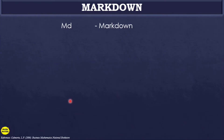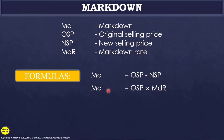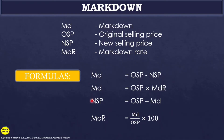The terminologies we will use in this lesson are: markdown, original selling price, new selling price, and markdown rate. The formulas are: Markdown = Original Selling Price − New Selling Price; Markdown = Original Selling Price × Markdown Rate; New Selling Price = Original Selling Price − Markdown; Markdown Rate = (Markdown ÷ Original Selling Price) × 100.